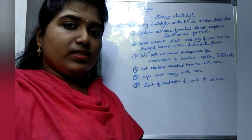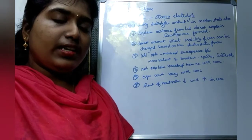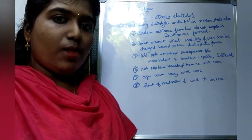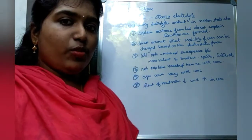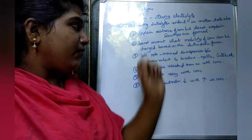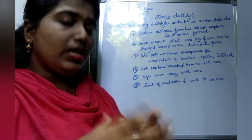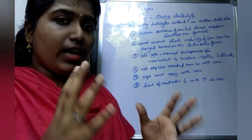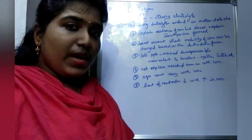The third limitation is that Arrhenius theory does not explain how ions are formed in solution — it only explains the existence of ions. The fourth limitation is that it does not account for the variation in mobility of ions due to electrostatic forces of attraction and repulsion between cations and anions, which can affect ionic mobility.